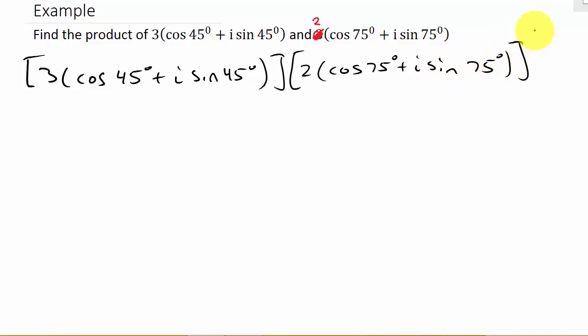So it's r₁ times r₂, so that's 3 times 2, times the cosine of (45° + 75°) plus i times the sine of (45° + 75°).